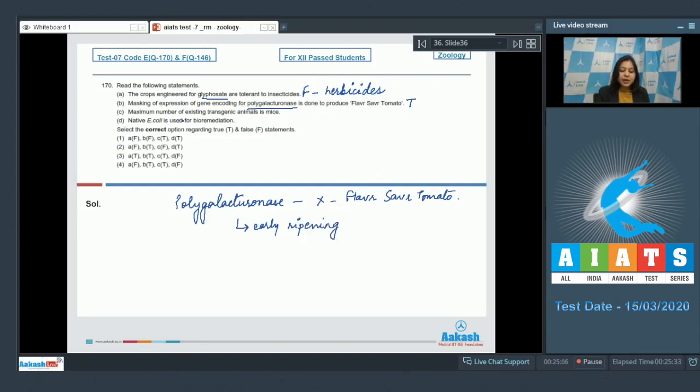Statement three, maximum number of existing transgenic animals is mice. This is also a true statement, as greater than 95% of existing transgenic animals are mice.